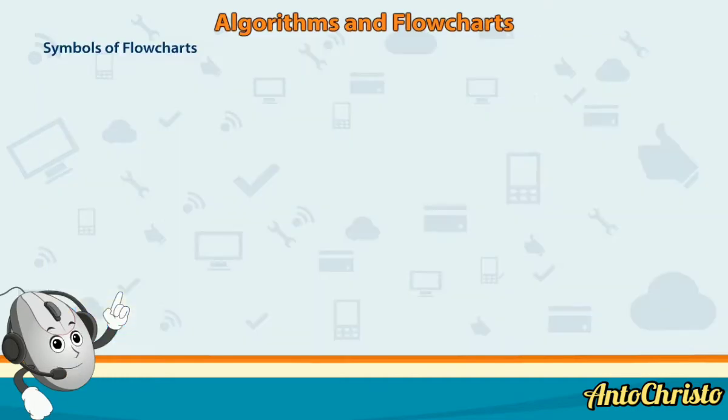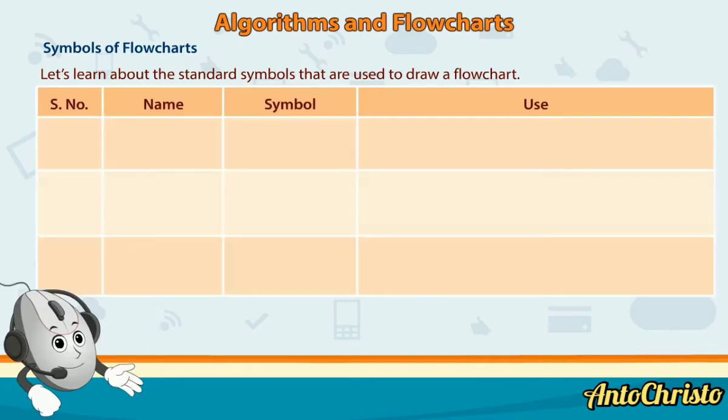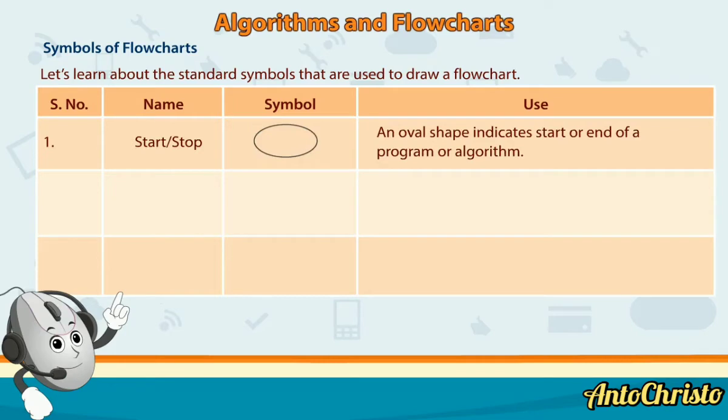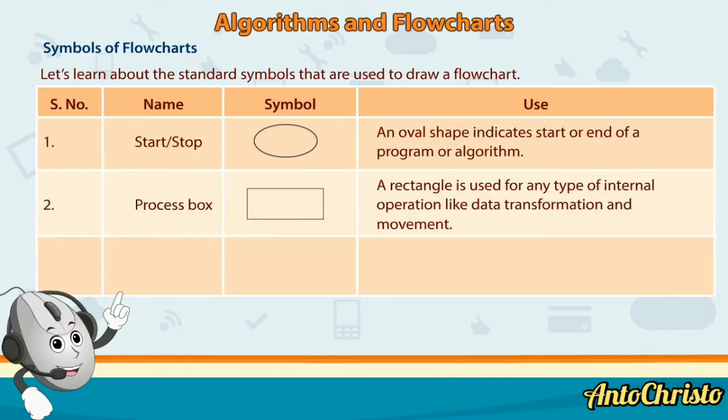Symbols of flowcharts. Let's learn about the standard symbols that are used to draw a flowchart. Serial number, Name, Symbol, Use. An oval shape indicates start or end of a program or algorithm. 2: Process box.